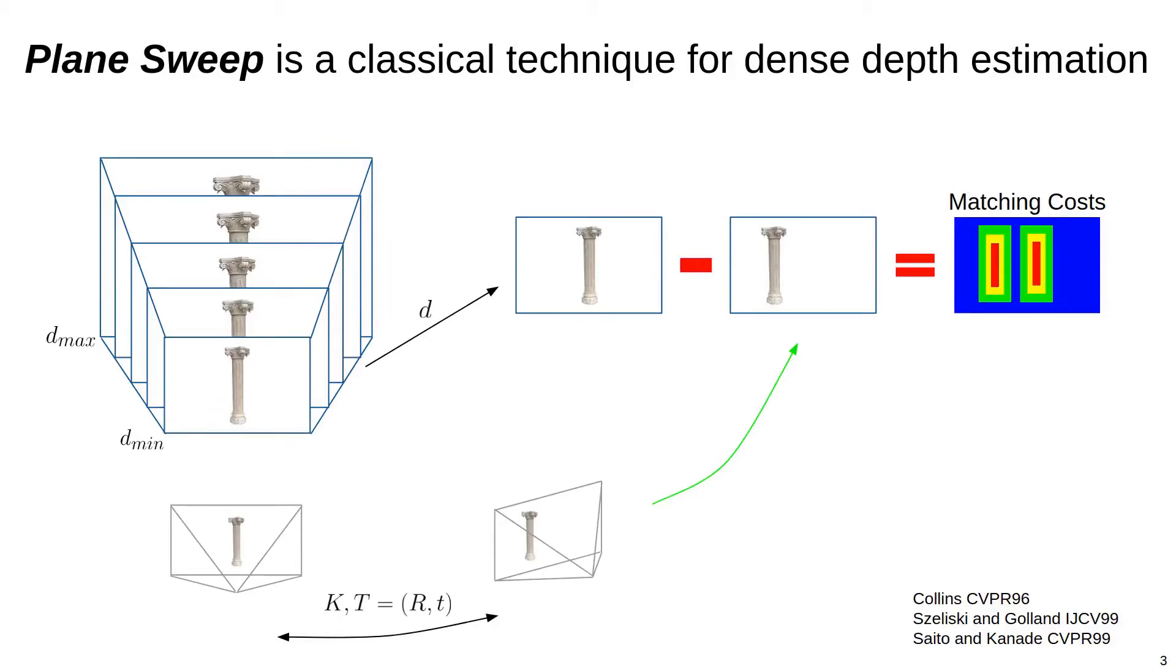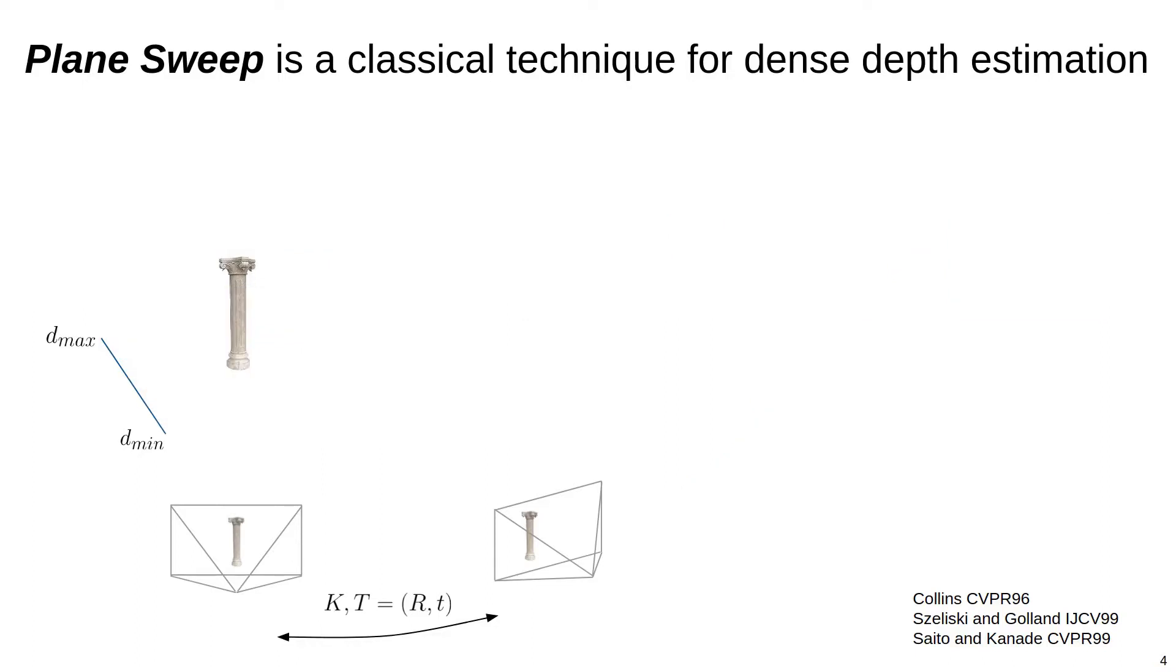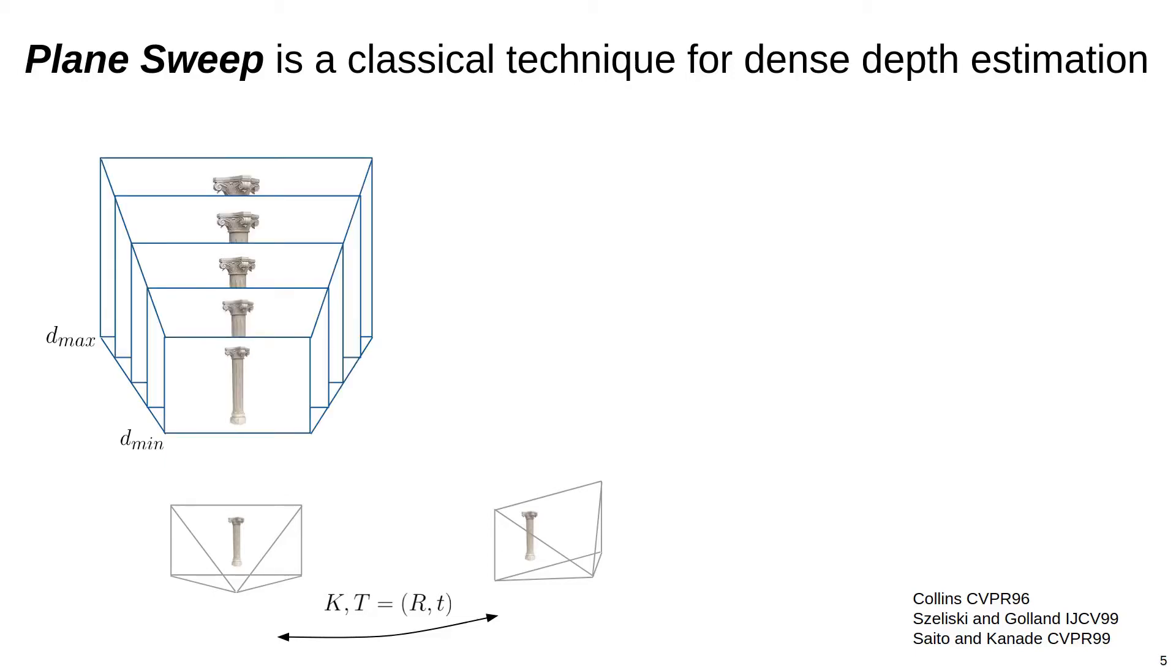Plane sweep is a classical technique for MVS that finds dense correspondences by reasoning over planes at different depths. Rather than finding correspondences for all individual pixels independently, Plane Sweep uses techniques from Multiview geometry to find the associations for all pixels in the reference image. First, a depth search range in a reference image is defined, and a set of depths in this range are sampled. When all the pixels in the reference image are considered, each depth sample induces a plane in 3D space.